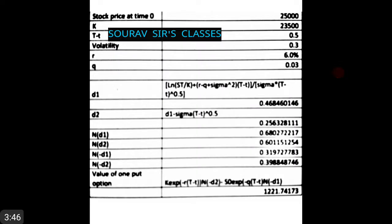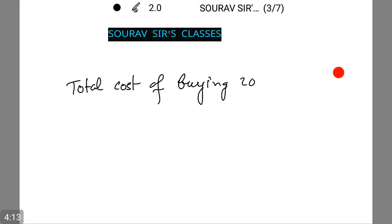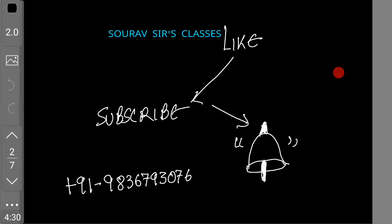I have summarized each and every value in this table — look at this table. The total cost of buying 20,000 options comes to 0.44 crores.